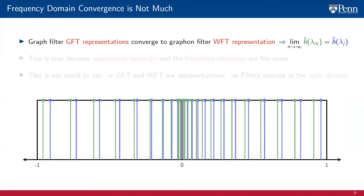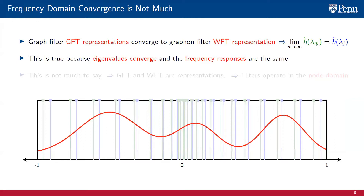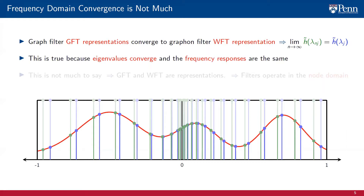Having convergence of frequency representations is neither unexpected nor strong. The result is not unexpected because the frequency representations converge due to the eigenvalues converging and the frequency responses of the graphon filters being the same. As we grow the index n, the eigenvalues of the graph approach the eigenvalues of the graphon. Given that the frequency response is continuous — it is a polynomial — the responses converge as well. This is literally the proof of the theorem. The result is not strong because the GFT and WFT are representations that exist in our minds; we use them for analysis but never compute them. Filters operate in the node domain, so meaningful convergence results must make claims on signal values, not on their spectral representations.